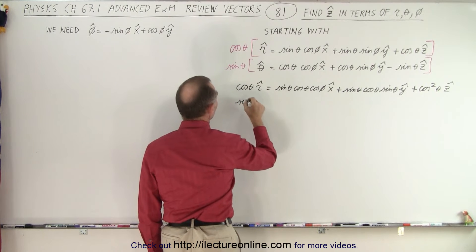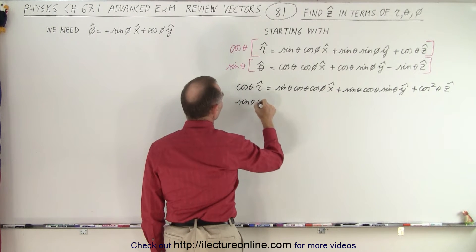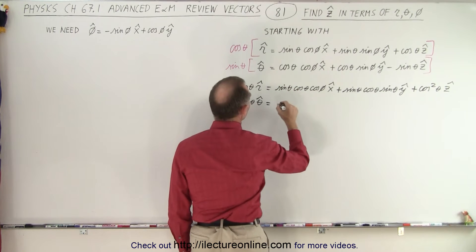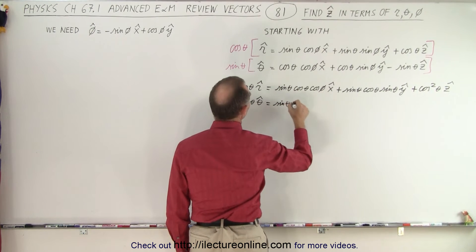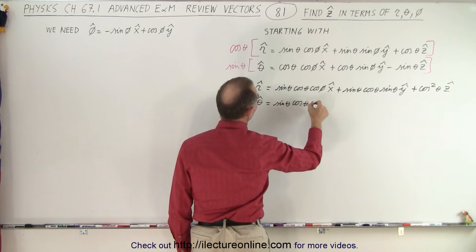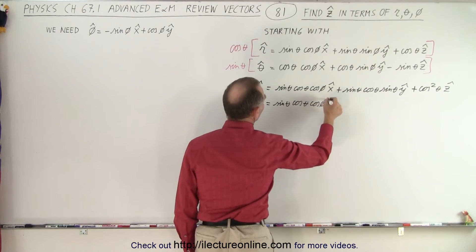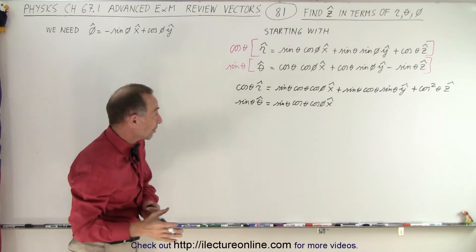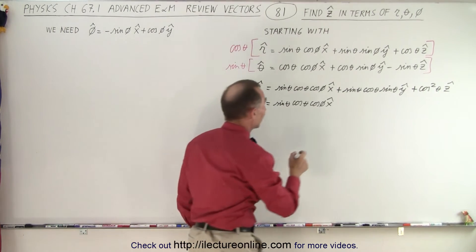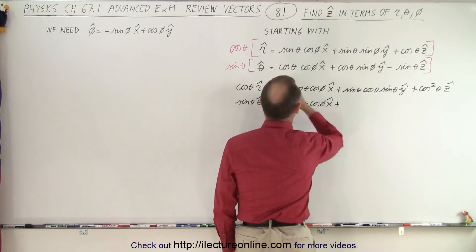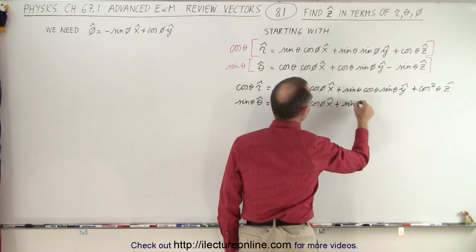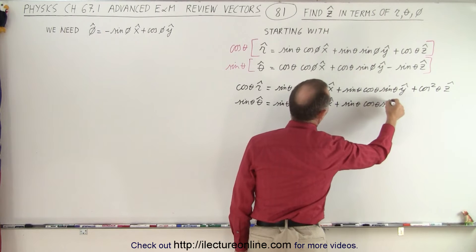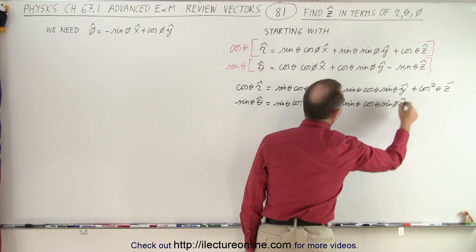The sine of theta times the theta unit vector equals the sine of theta cosine of theta cosine of phi x unit vector. Notice they look exactly the same, so when we subtract one from the other they cancel out. And here we have plus the sine of theta cosine of theta sine of phi y unit vector — and again they look exactly the same, so subtracting this from this, the y unit vectors cancel out — minus the sine squared of theta z unit vector.